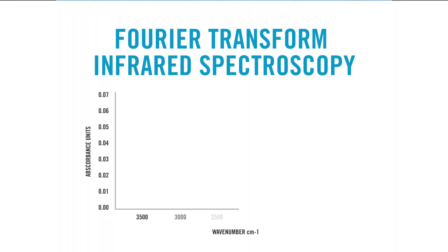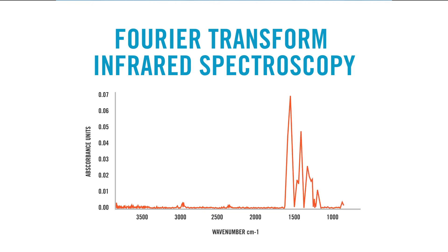Our next step is to look at the foulant using Fourier transform infrared spectroscopy. During this analysis, unique peaks are seen which correspond to different functional groups. This analysis revealed the presence of iron peaks, as well as calcium hydroxide peaks. No significant organic peaks were observed during this analysis, so we know that organics are not one of their main foulants.